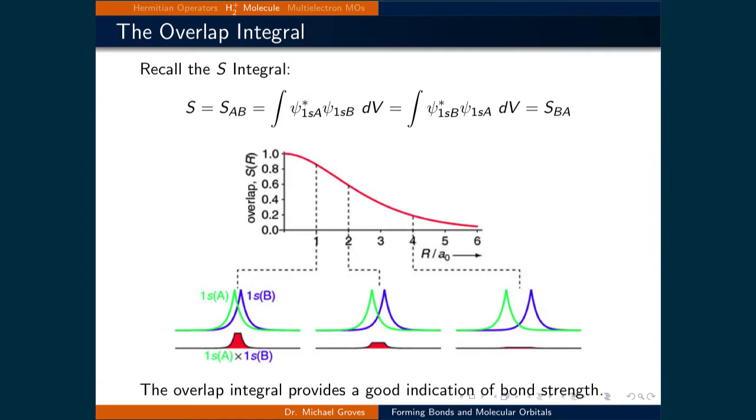Let's now examine the solutions we just solved for more closely. Recall the S integral, where S is equal to the integral over all space of psi star 1s of nuclei A times psi 1s of nuclei B.